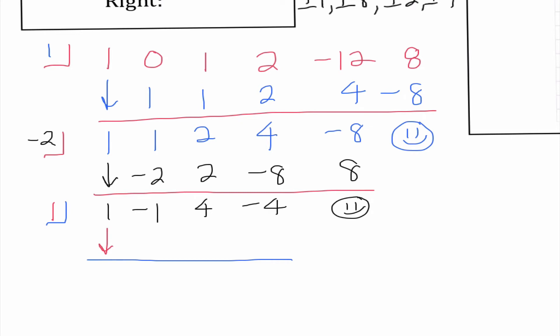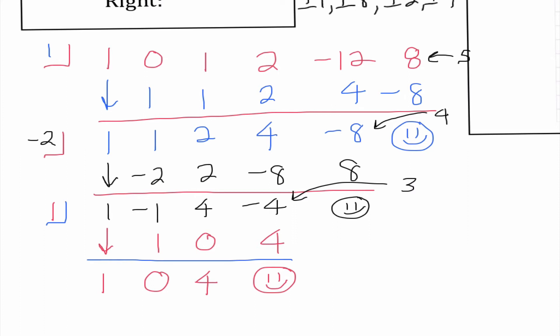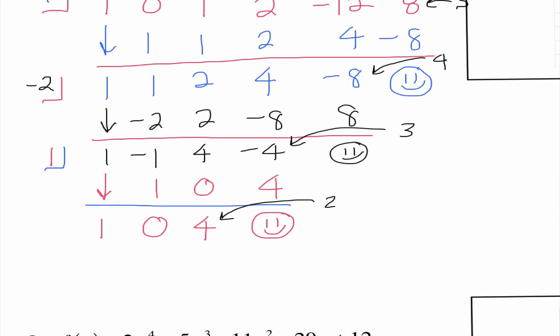Just because something works once does not mean it's going to work again. The order that I choose to put these in does not matter — I end up getting the same answer either way. So: that was to the 5th power, that was to the 4th power, this is to the 3rd power. 1 times 1 is 1, I get 0; 0 times 1 is 0, I get 4; 4 times 1 is 4, and I get 0. Now I have something with a degree of 2, and we know how to solve this. I'm going to make this x squared plus 4 equals 0.